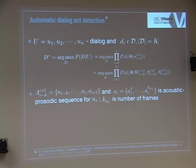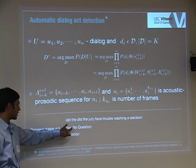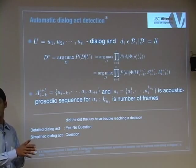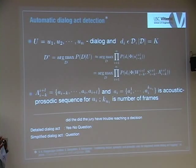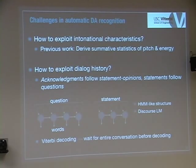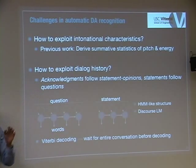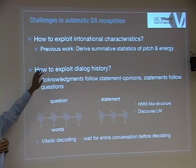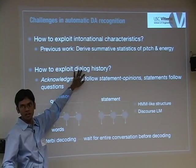Let's move on to the dialogue act part. Given an utterance, what we're interested in doing is either detecting it as a very detailed category — such as statement, opinionated statement, non-opinionated statement, yes-no question — or into a simplified dialogue act set. In many applications we just want to know if it's a question, a statement, or an acknowledgement. There are two challenges: first, how do you meaningfully use intonational information (like the rising pitch of yes-no questions) in an actual application? Second, how do you exploit dialogue history? If someone makes an opinionated statement, the other person will likely give an acknowledgement or refuse; if you ask a question, the other person will likely give a statement answer.